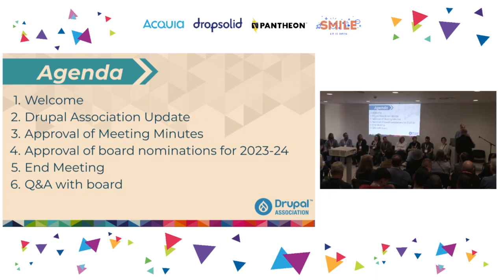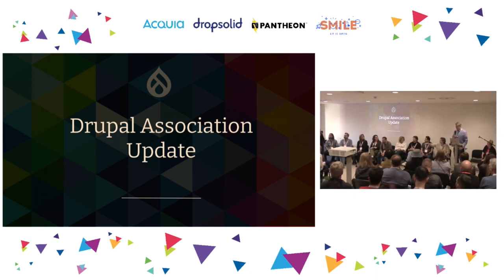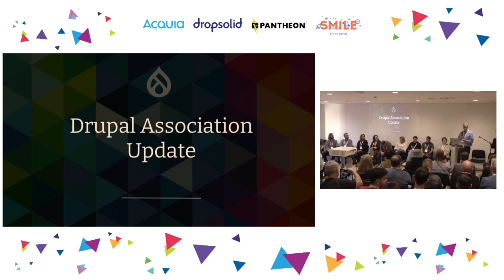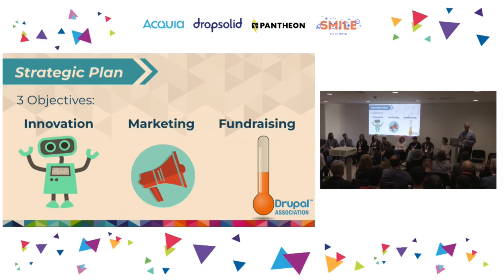The time is 4:19. The meeting is called to order. The first topic is the Drupal Association update. There are some chairs right here. I'm happy to provide a five or six minute update on what the Drupal Association has been doing — not everything, but let's start with the new strategic plan.